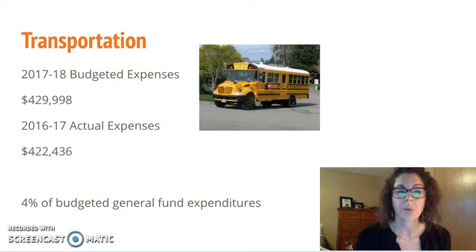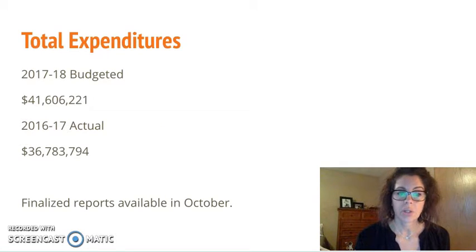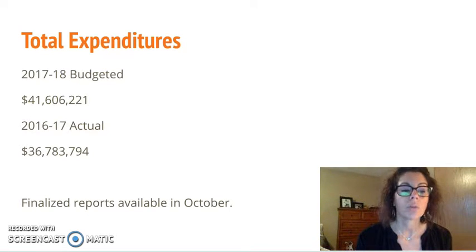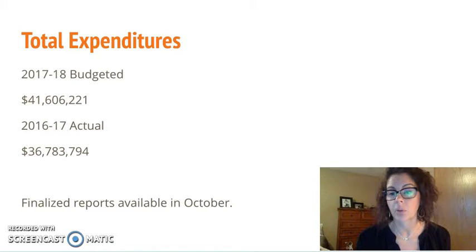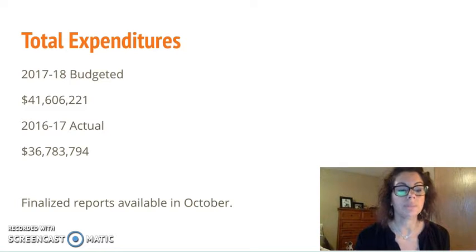Transportation costs in USD 418 are shown here; that accounts for about 4% of general fund expenditures in our district. Total expenditures for fiscal year 17 and what was budgeted for 18 are also shown. This is one of those reports that is typically finalized and available in early October, so the actual expenditures per the audit information just hadn't been released yet on the website.